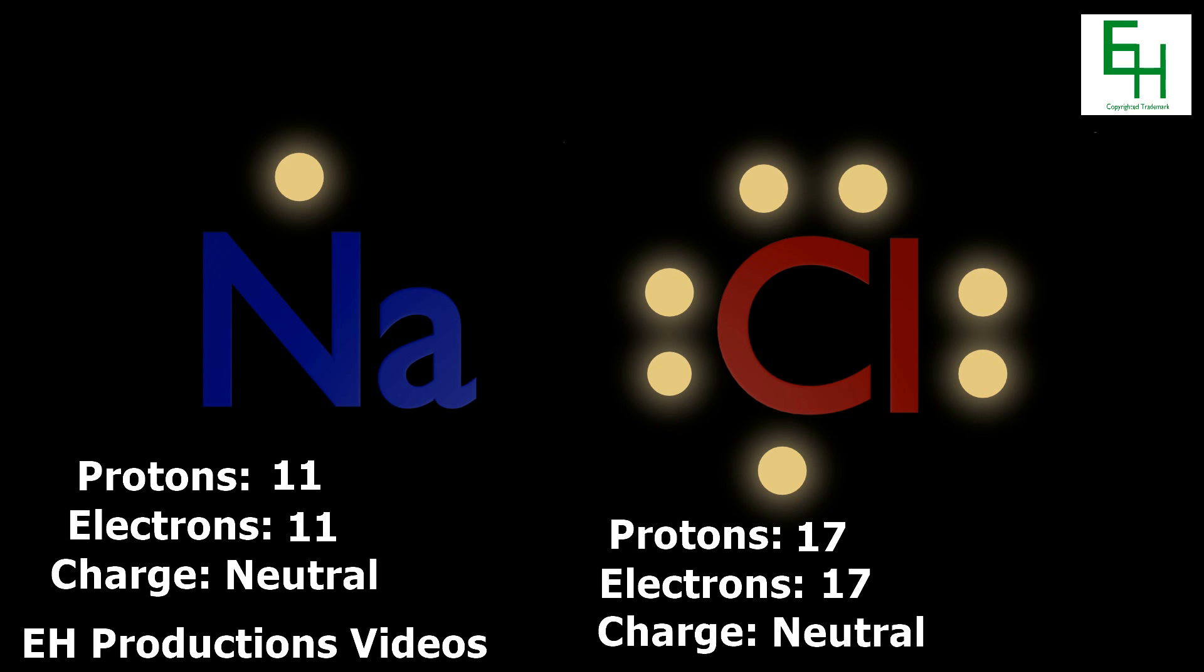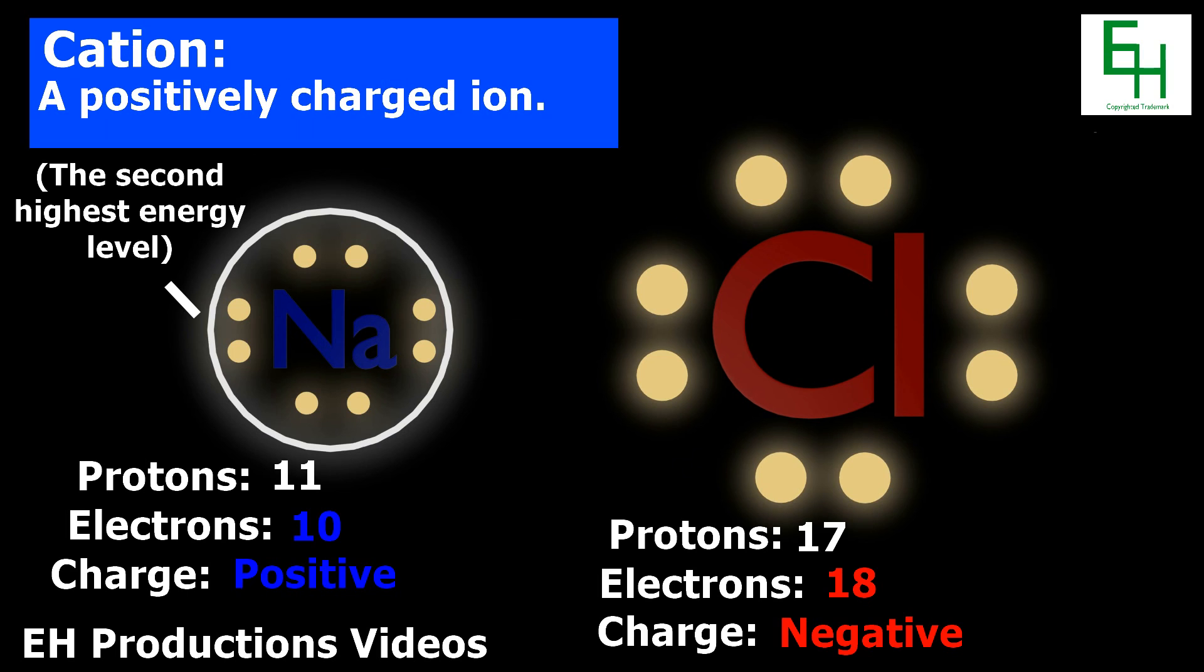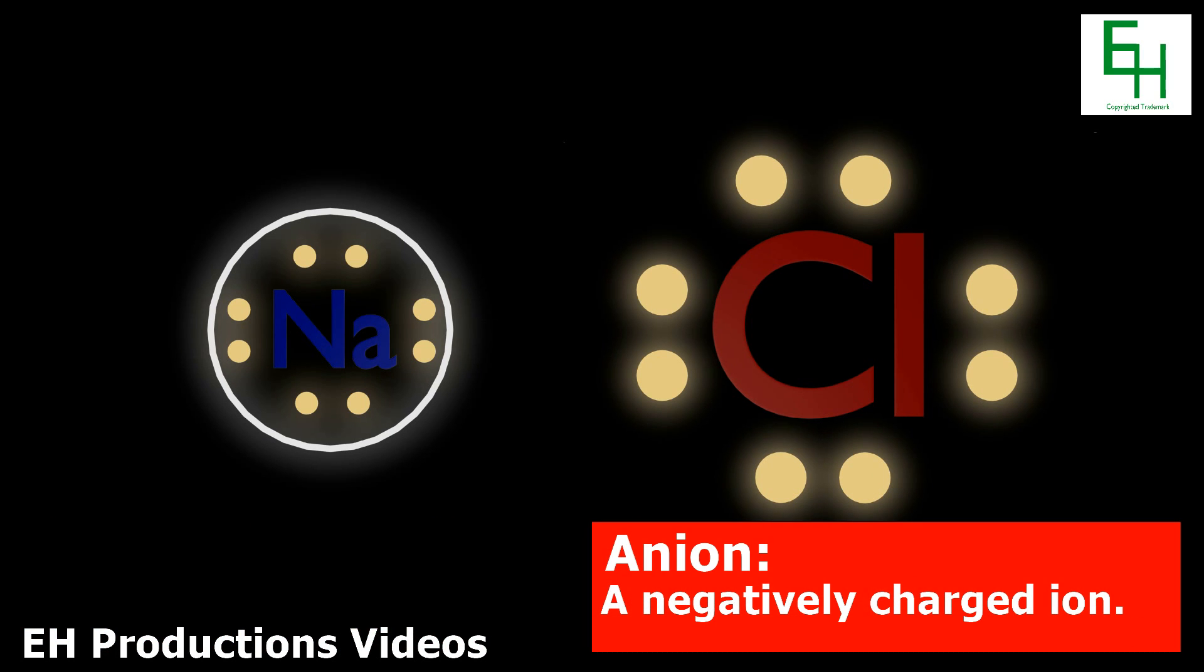So when they react, sodium loses an electron. Therefore, sodium becomes a cation because there are now more protons than electrons, and chlorine becomes an anion because it now has 1 more electron.